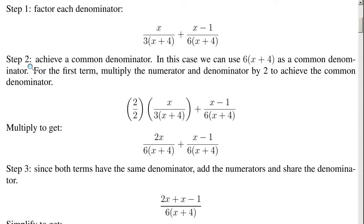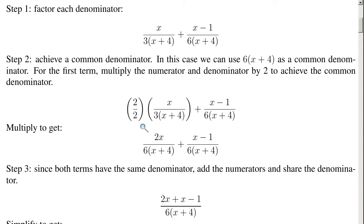Step 2: achieve a common denominator. In this case, we can use 6 times (x plus 4) as a common denominator, because 6 is just double 3. For the first term, multiply the numerator and denominator by 2 to achieve the common denominator. The reason why we're multiplying by 2 over 2 is because it's just multiplying by 1, which means it's going to be the same thing, just written in a different way. So we can go 2 times x equals 2x, and 2 times 3 is 6.